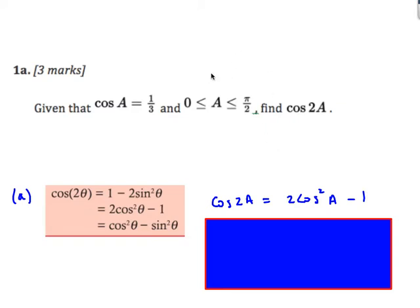Here's the first one — a very common sort of question. Given that cos a is 1/3, and a is between 0 and π/2, find cos 2a. We have a choice of three different double angle formulas. Since we've got cos a, let's choose the most useful one and use cos 2θ = 2cos²θ − 1.